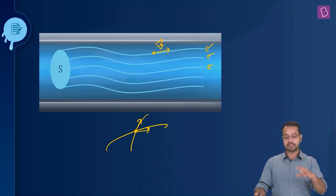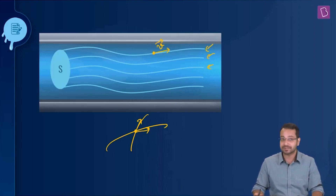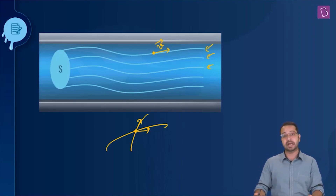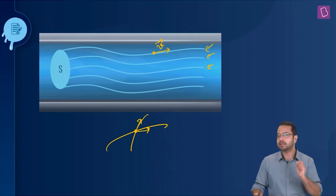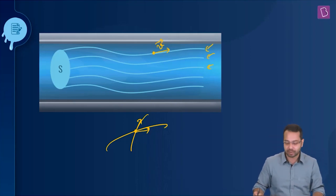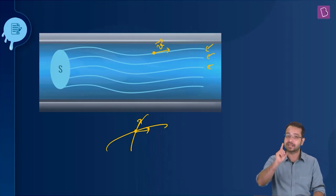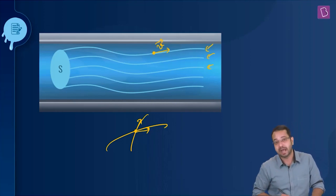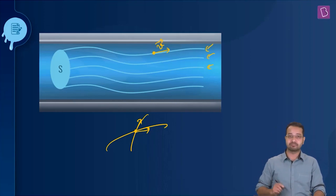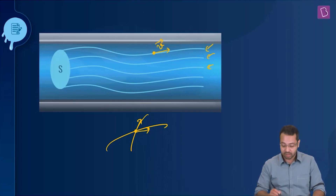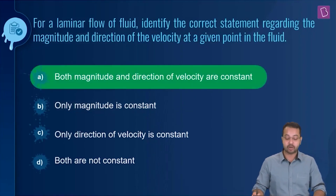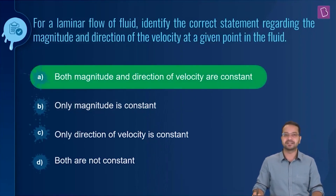In streamline flow, at a particular point, any particle arriving there will have the same velocity both in magnitude as well as in direction. Which means option A is going to be the right answer.